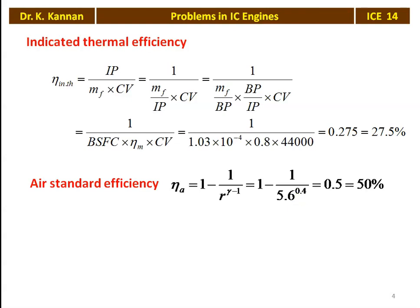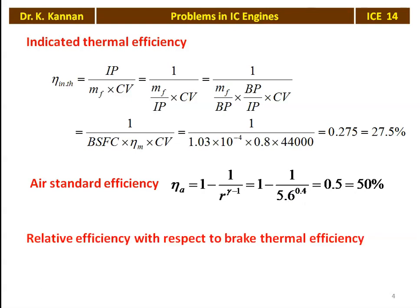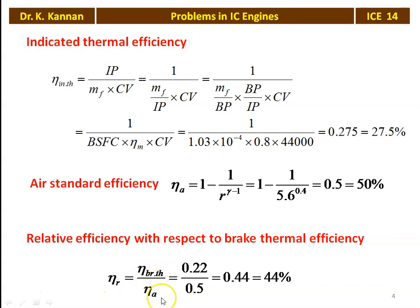The air standard efficiency for the petrol engine working on the Otto cycle: eta_A = 1 − 1/R^(γ−1) = 1 − 1/(5.6^0.4) = 0.5, which is 50%. The relative efficiency with respect to brake thermal efficiency equals brake thermal efficiency divided by air standard efficiency = 0.22 / 0.5 = 0.44, which is 44%.